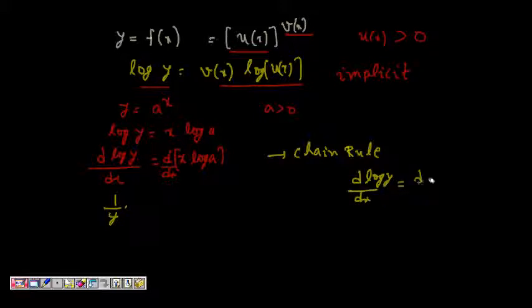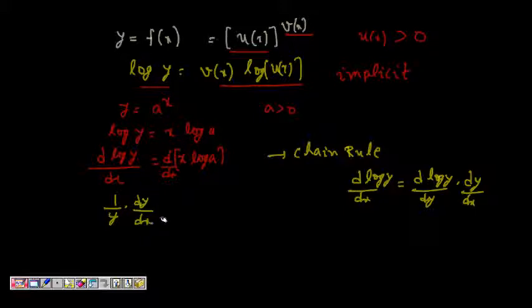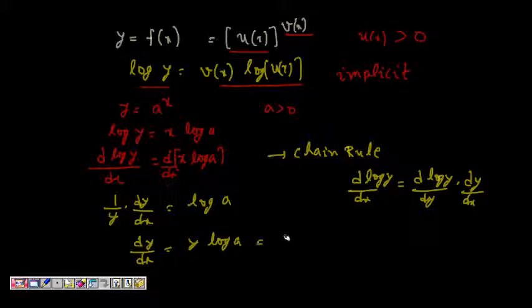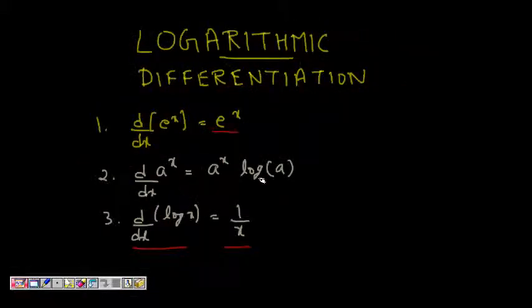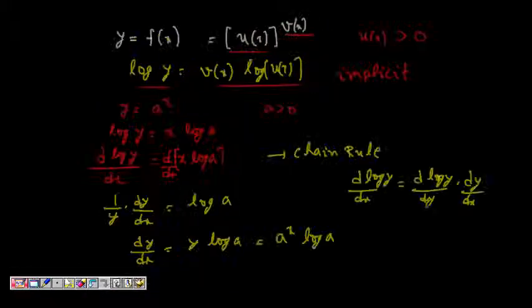Applying the chain rule, we get 1 by y times dy by dx equals log a. Therefore dy by dx equals y log a, which equals a to the power of x times log a — and that's exactly the result we stated at the beginning.